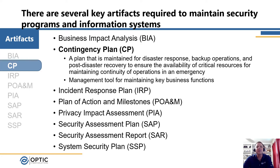Next we have the Contingency Plan. A contingency plan is a tool used to help manage our information system if something happens. For example, if we lose a database — do we have a backup database or a hot spare we can swap in? The contingency plan defines how we are going to maintain the operations of our systems in the event something happens.